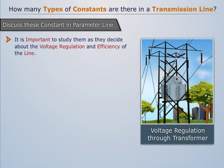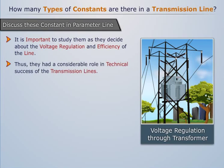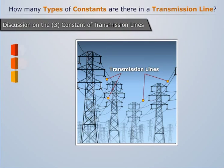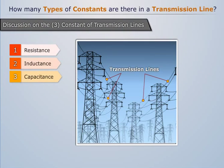It is important to study them as they decide about the voltage regulation and efficiency of the line. Thus they have a considerable role in technical success of the transmission lines. All these parameters are uniformly distributed along the line of transmission. Here is the brief discussion on the three constants of transmission lines.